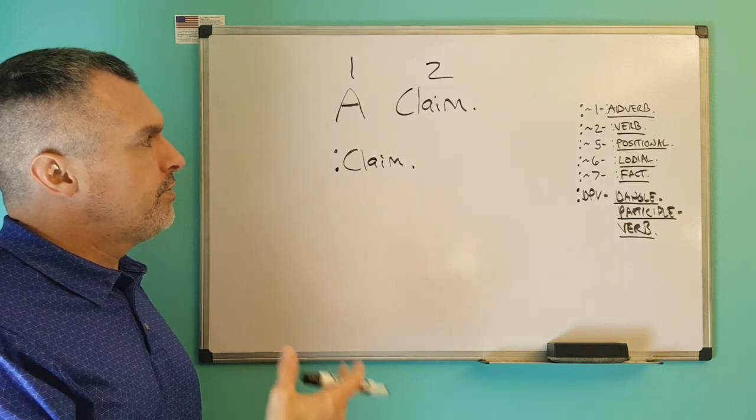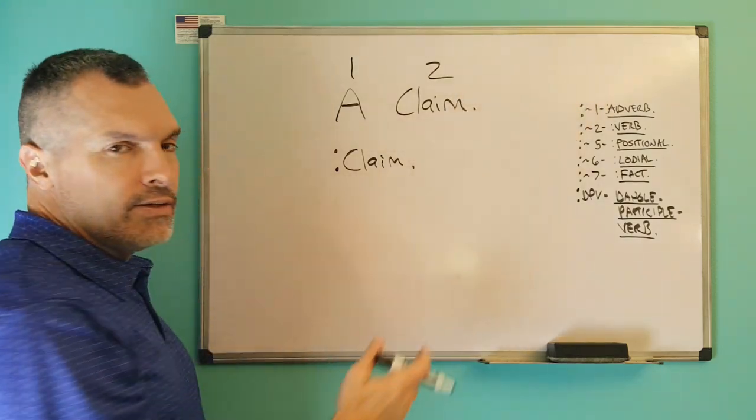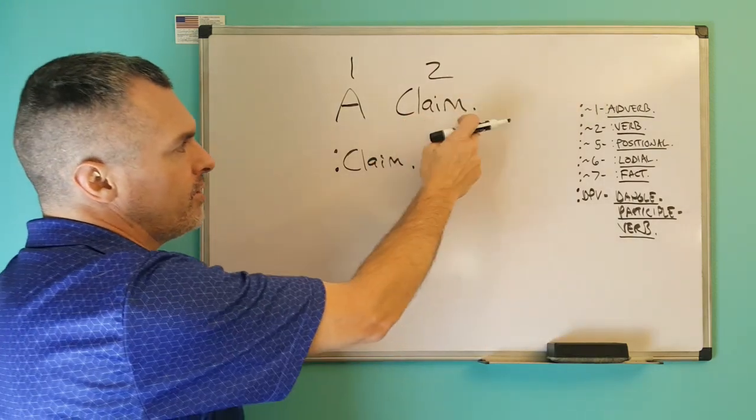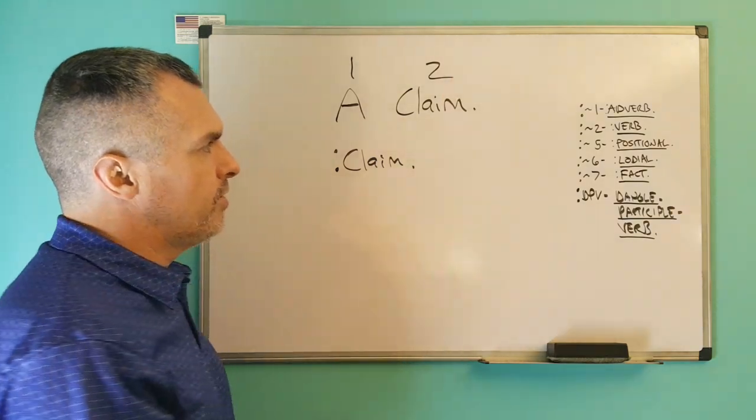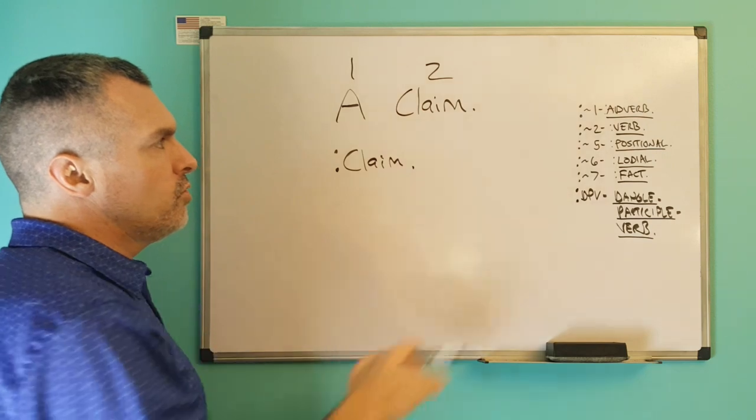Now, the verb of thinking is a claim. Of what? There's nothing. There's nothing there. So, therefore, it is a dangling participle verb. It's a verb that's dangling there with no closure.